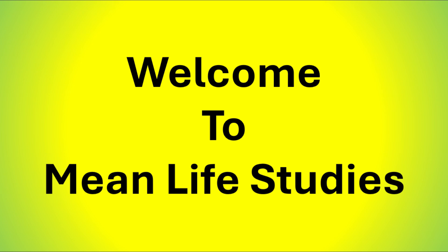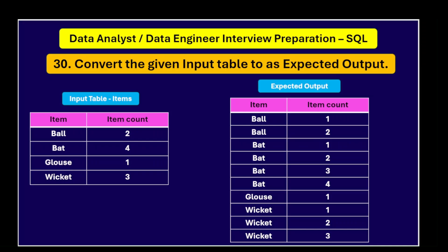Hello everyone. Welcome to Minilife Studies. In this video, we are going to solve one more SQL problem as part of Data Analyst or Data Engineer interview preparation. You can see here that is question number 13. Convert the given input table to the expected output. We have an input table called items and this is the expected output, with two columns: item and item count.